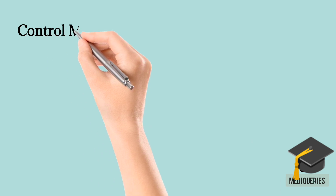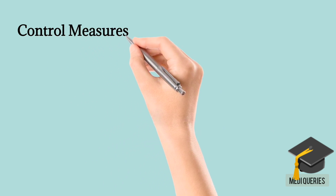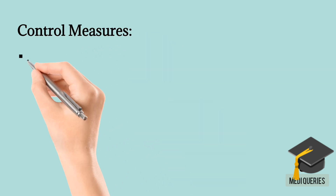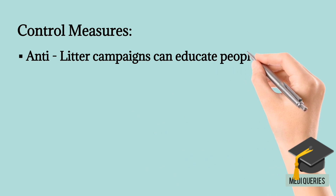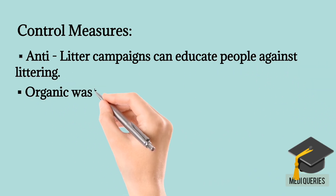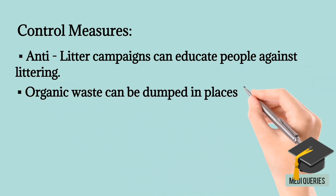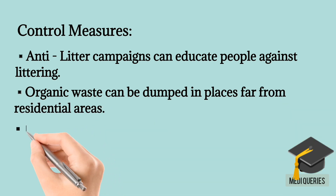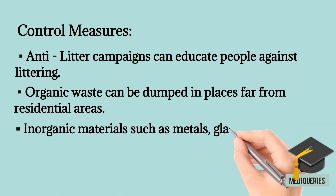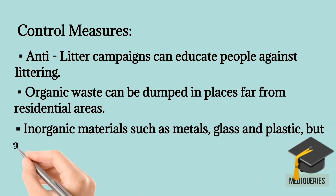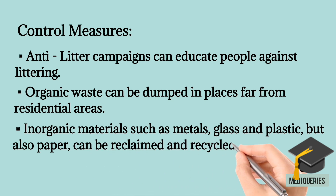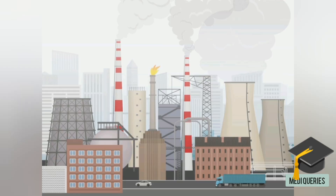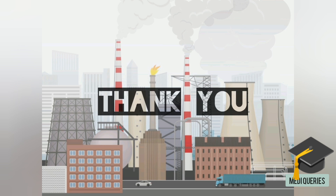Control Measures. The following measures can be used to control land pollution: anti-litter campaigns to educate people against littering; organic waste can be dumped in places far from residential areas; inorganic materials such as metals, glass, plastic, and paper can be reclaimed and recycled. This covers various types of pollution and their pollution control measures. Thanks for watching this video.